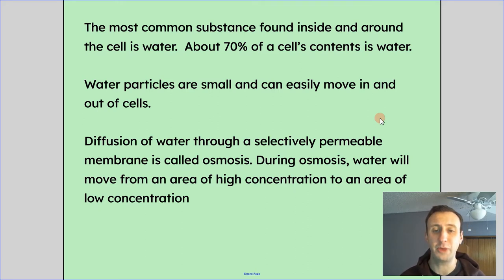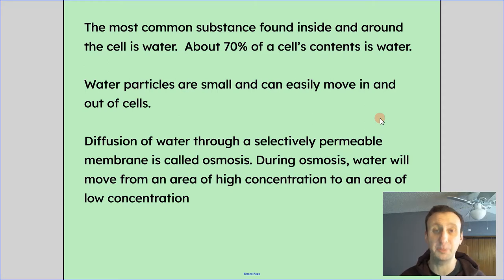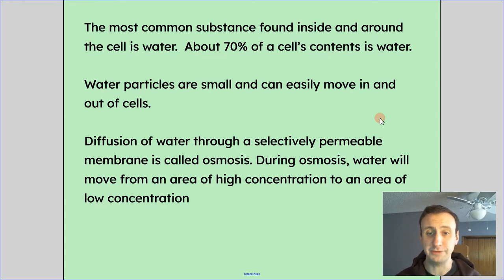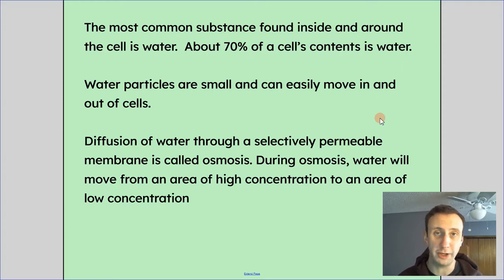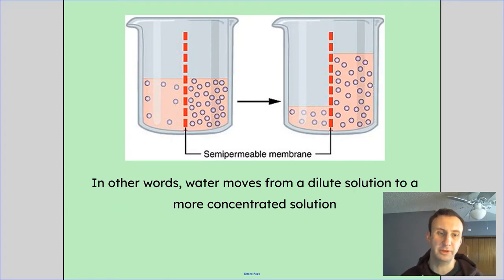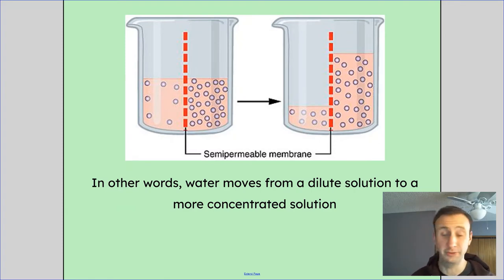Diffusion of water through a selectively permeable — and I use the term semi-permeable; these both mean the same thing — membrane is called osmosis. During osmosis, water will move from an area of high concentration to an area of low concentration. Water goes from where there is more water to where there is less water. In other words, water moves from a dilute solution to a more concentrated solution.